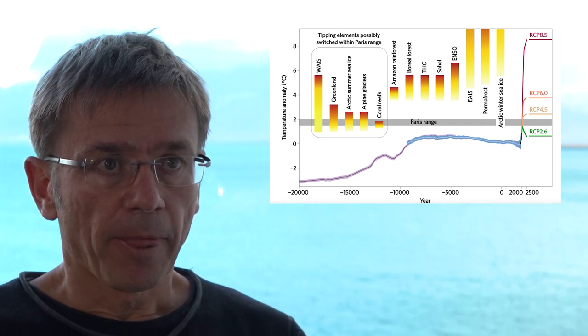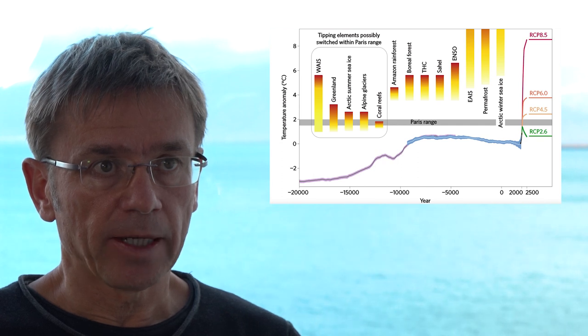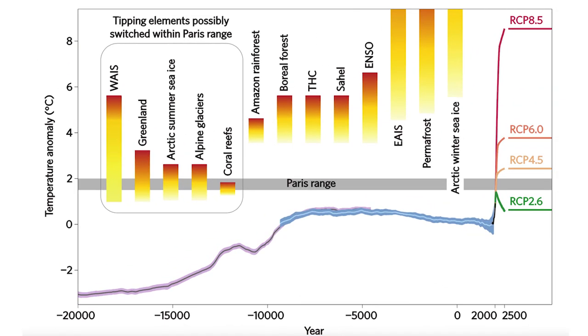Looking further on the right-hand side of the diagram, there are additional critical tipping elements, including the Atlantic Ocean circulation — widely known as the Gulf Stream system — which runs the risk of collapse at higher temperatures, luckily well above the Paris range. But these further tipping elements illustrate the increasing risks we run if we do not implement the Paris Agreement and instead allow warming of 3 degrees or 4 degrees.